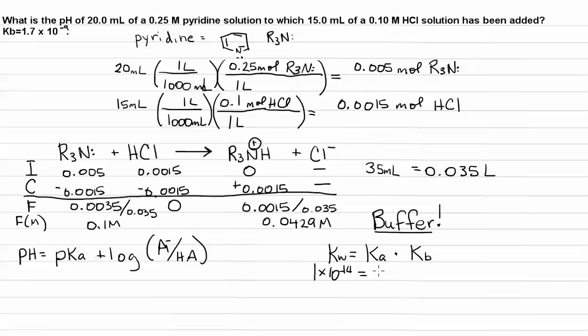So 1 times 10 to the minus 14th is the Kw for water, equals that Ka that we're looking for, times Kb, 1.7 times 10 to the minus 9th. So that means that our Ka is equal to 5.88 times 10 to the minus 6th. We're looking for the pKa. pKa is the negative log of the Ka. So the pKa, negative log 5.88 times 10 to the minus 6th, equals 5.23.